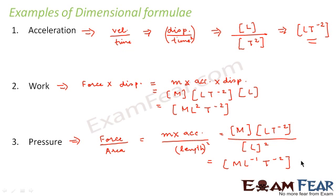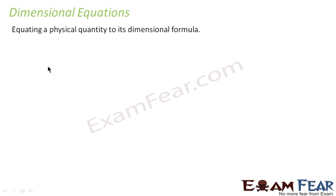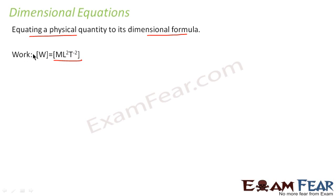To find the dimensional formula for any physical quantity, first break it into the very basic quantities, then write the dimensional formula for each, and combine them. A dimensional equation is obtained by equating a physical quantity to its dimensional formula — for example, writing W = [M·L²·T⁻²] is the dimensional equation for work.